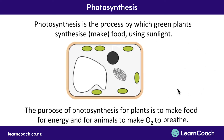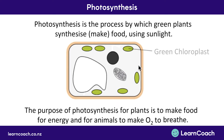Now let's look at how this fits into a cell. Photosynthesis is the process by which green plants make food. The reason plants are green is that plant cells contain organelles called chloroplasts, and this is where photosynthesis happens. We're going to delve down and look closely at these chloroplast organelles to see how it works.